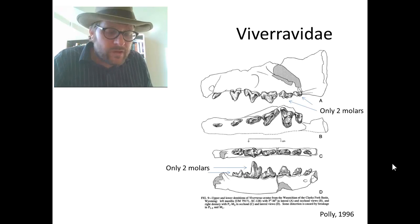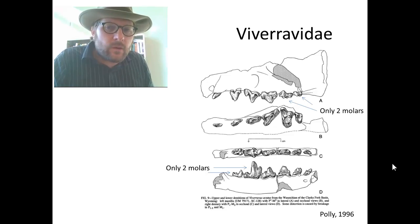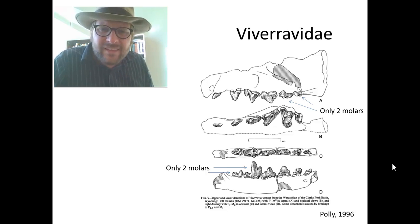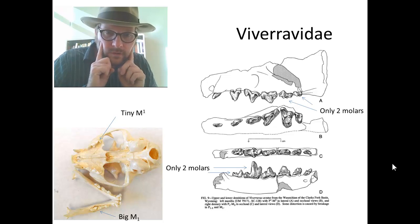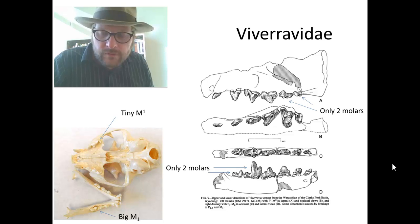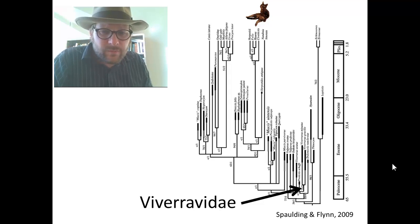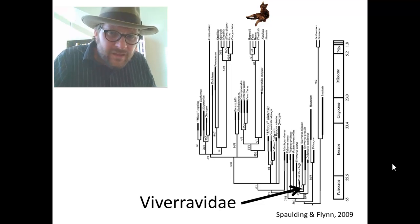Now the Viverravidae were for a long time considered to be more closely related to our domestic house cat, because they only had two molars on the upper part of the jaw and two molars on the lower part of the jaw. This is similar to the condition we see in modern house cats, where they have a very tiny upper first molar and just one big lower molar. This meant that the Viverravidae were maybe a little bit more closely related to the Felids, the cat family. However, more recent studies have placed the Viverravidae as one of the more primitive groups of the Carnivora Morpha, placed in the Archaic Carnivora. They existed during the Paleocene and Eocene.